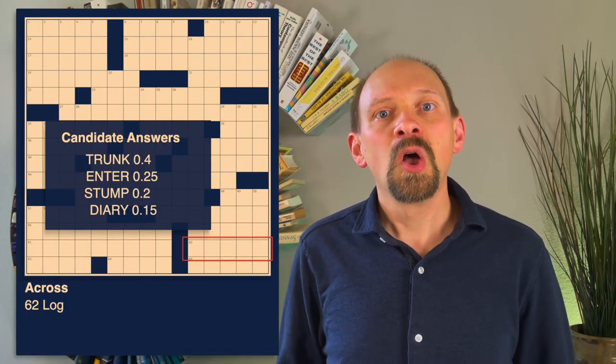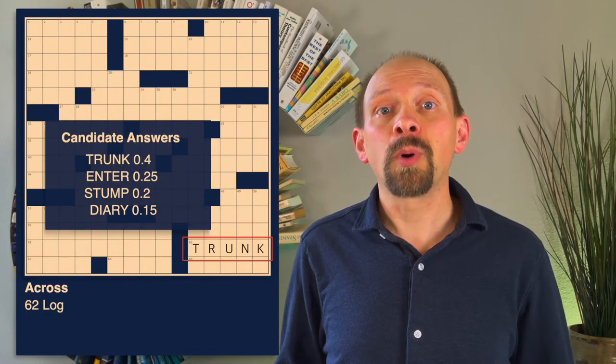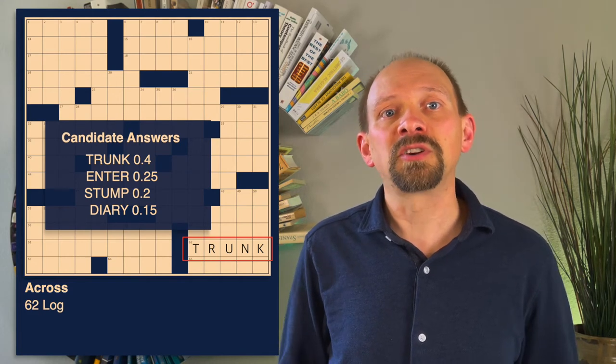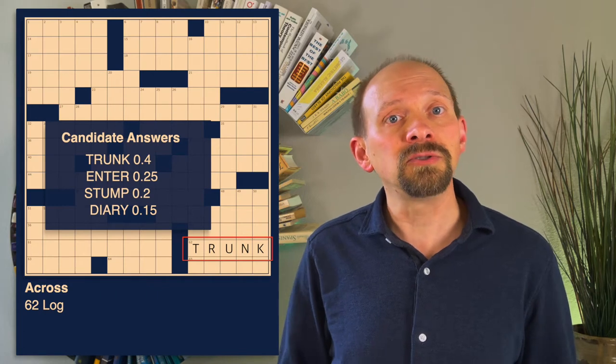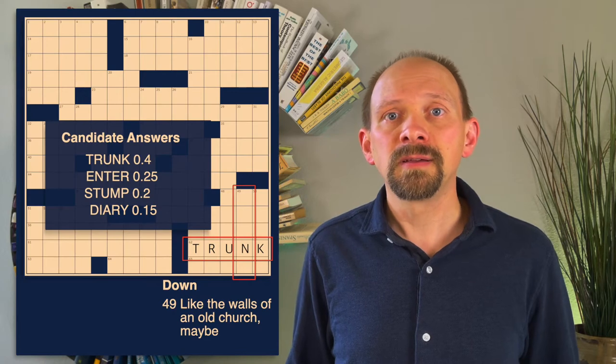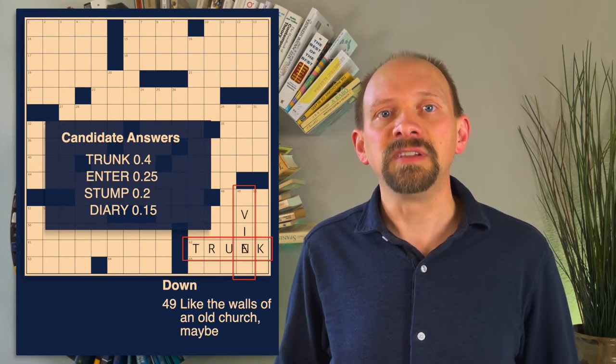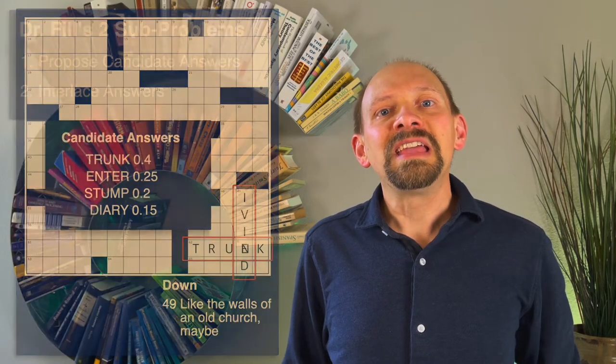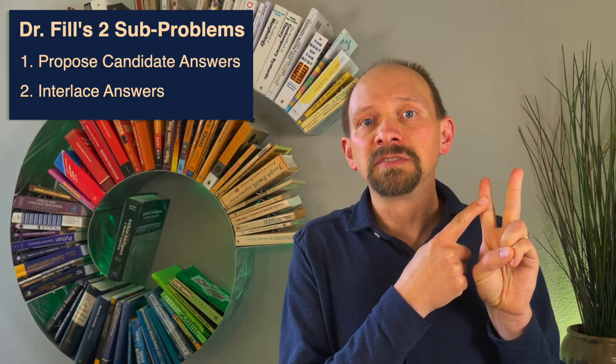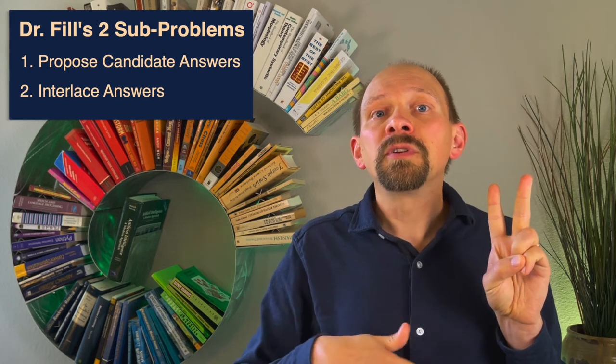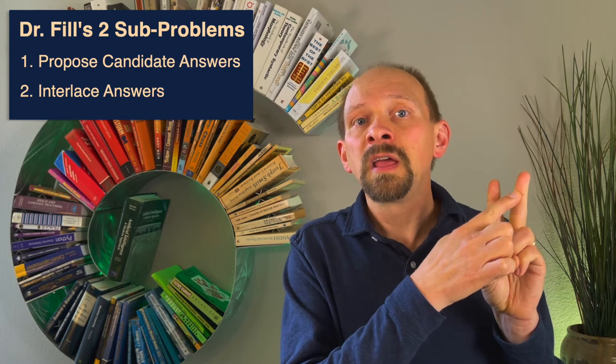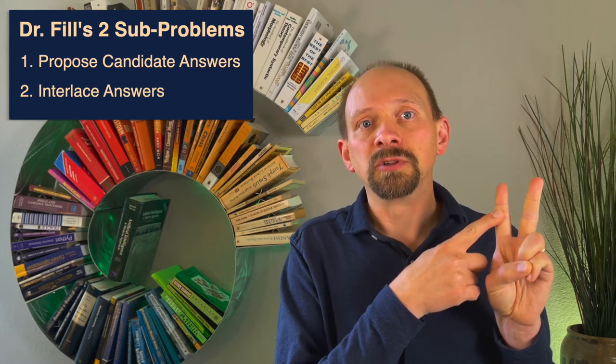In our example, while trunk has a higher probability of being the correct fill in isolation, its letters conflict with the correct fills for the intersecting clues, such as 49 down, like the walls of an old church maybe, where the answer is ivied. Although the interlacing of answers happens after the AI has proposed candidate fills for each clue, the algorithm for completing full puzzles was developed first, so we'll start there and come back to answering individual clues in a moment.